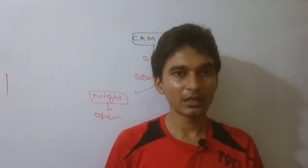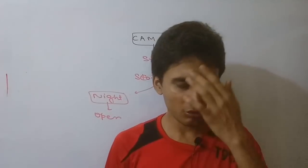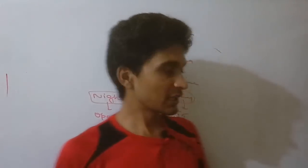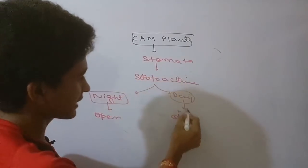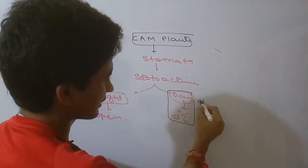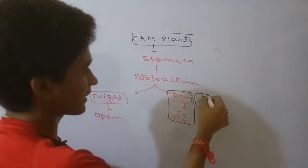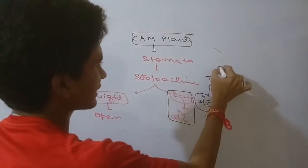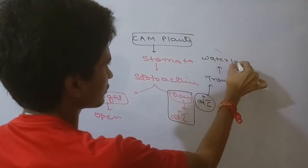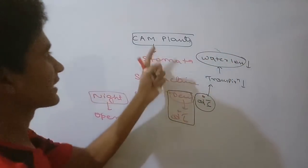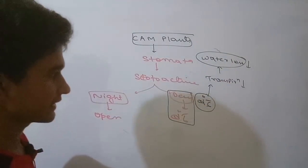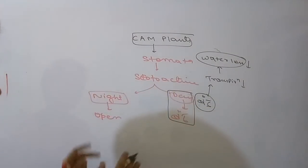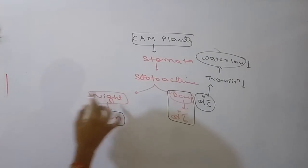The stomata close during daytime to minimize water loss in the form of transpiration. To minimize transpiration and water loss, stomata close during day. This minimizes water loss. At night, stomata open.